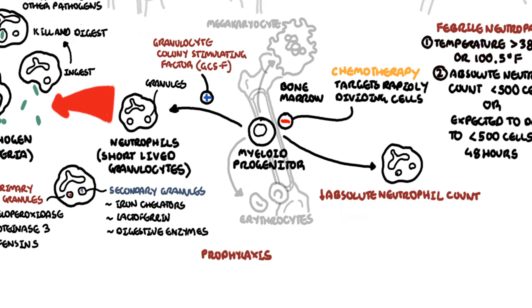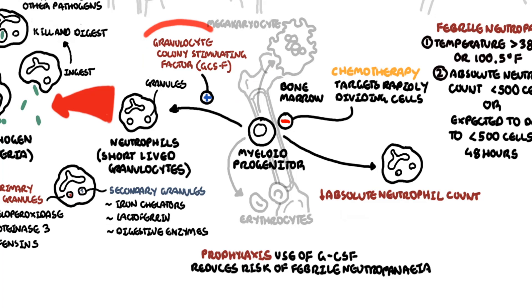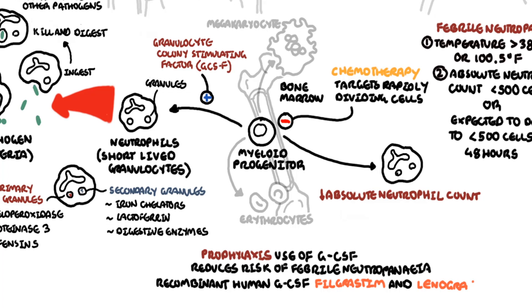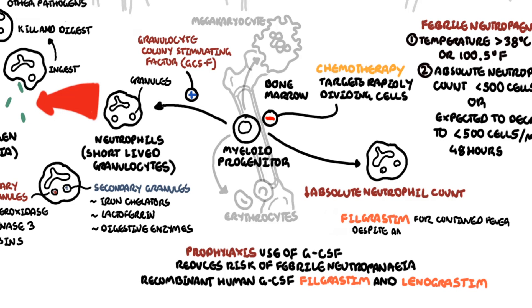The prophylactic use of granulocyte colony stimulating factor (G-CSF) or granulocyte macrophage colony stimulating factor reduces the risk of febrile neutropenia. G-CSF is a glycoprotein which stimulates the survival, proliferation, differentiation and function of neutrophil granulocyte progenitor cells and mature neutrophils. The two forms of recombinant human G-CSF in clinical use include filgrastim and lenograstim. G-CSF is also used for people who already have febrile neutropenia despite antibiotic use, or who have severe neutropenia expected to last for many days.